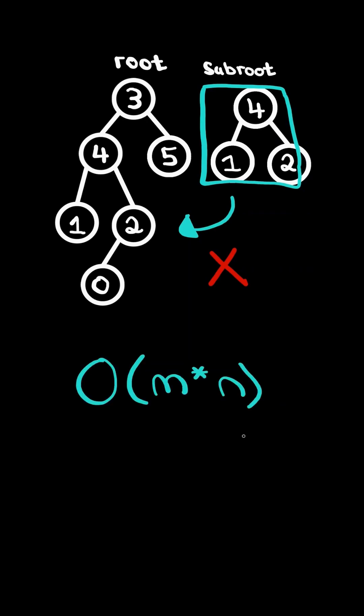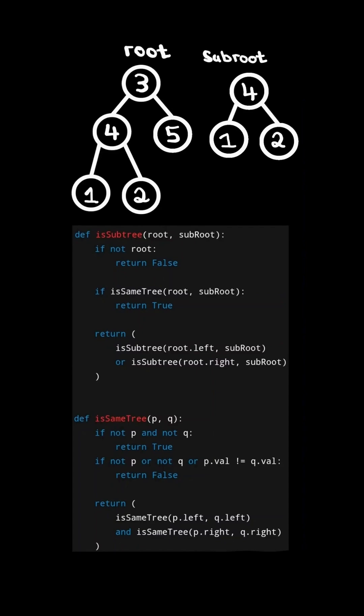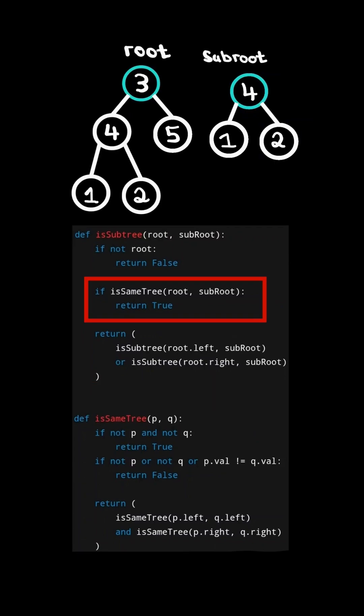We will solve this in O(M × N) time, where M is the number of nodes in the root tree and N is the number of nodes in the subroot tree. First, consider the code below. We will have a function isSubtree where we pass in the root and subroot, and another function isSameTree where we pass in the root and subroot.